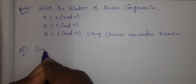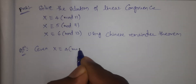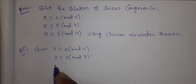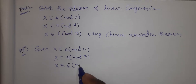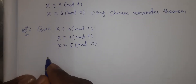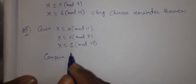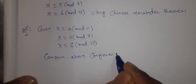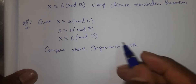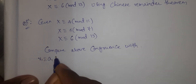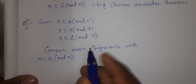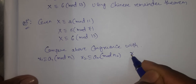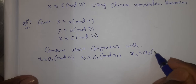Given: x ≡ 4 mod 11, x ≡ 5 mod 7, x ≡ 6 mod 13. Now compare the above congruences with x1 ≡ a1 mod n1, x2 ≡ a2 mod n2, x3 ≡ a3 mod n3.